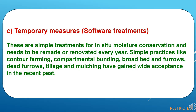The third category is temporary measures, also known as software treatments. These are simple treatments for in-situ moisture conservation and need to be remade or renovated every year. Simple practices like contour farming, compartmental bunding, broad bed and furrows, dead furrows, tillage and mulching have gained wide acceptance in recent times.